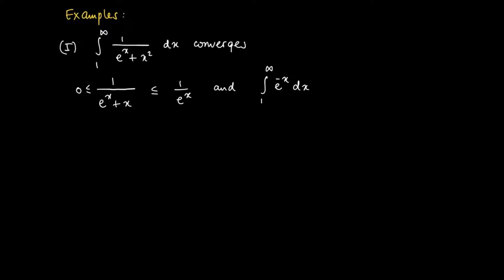So 1 over e to the power x. So I know that by the comparison criterion, if I look at the right-hand side, the integral from 1 to infinity e to the x dx equals the limit for t to infinity of its primitive, minus e to the power minus x in between 1 and t.